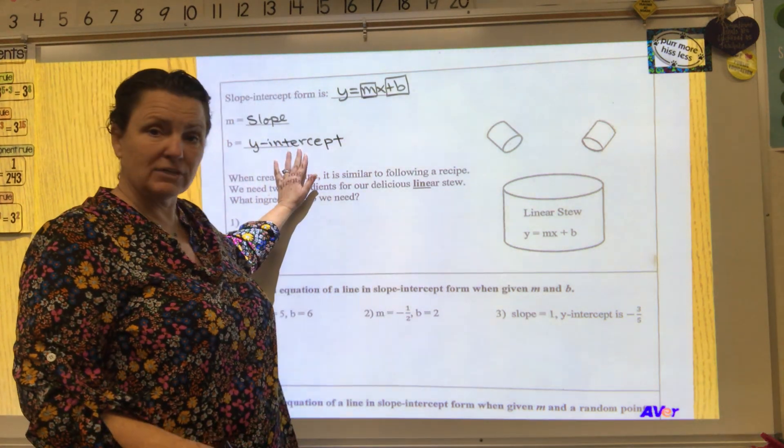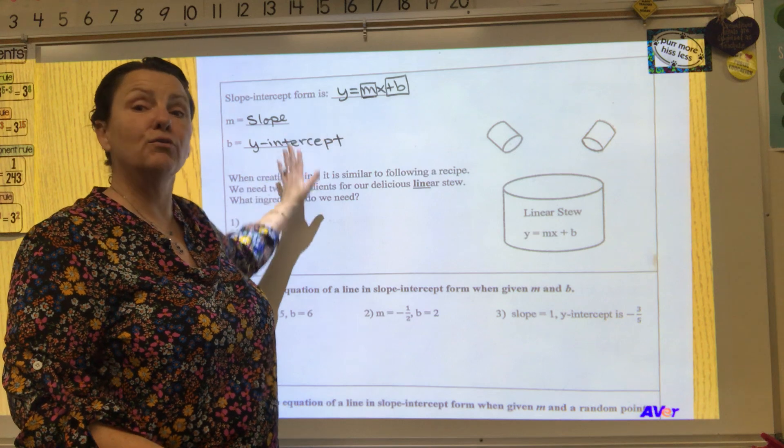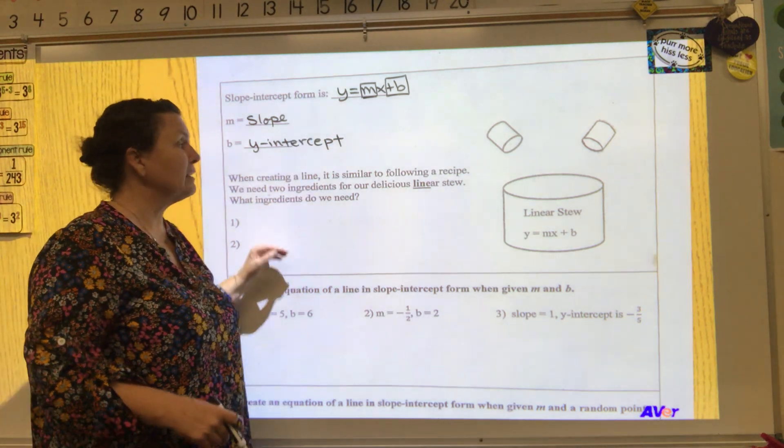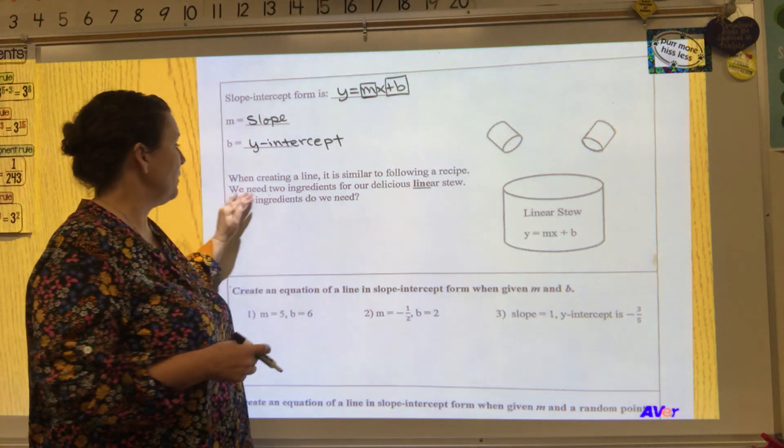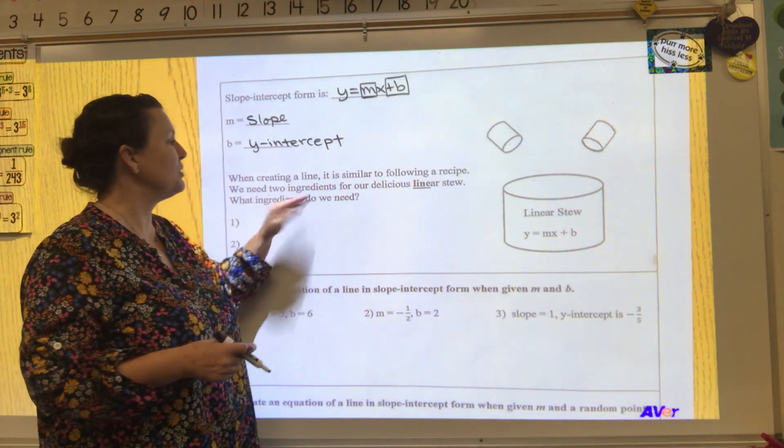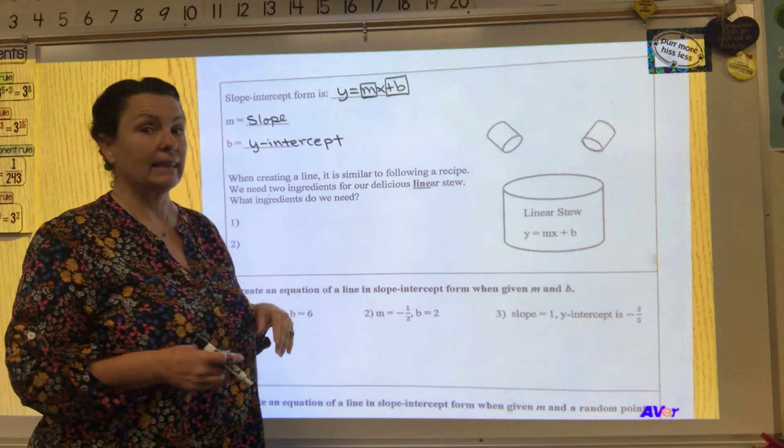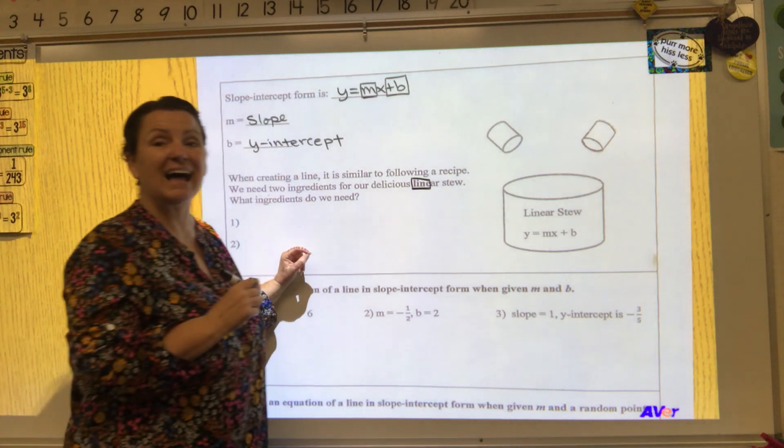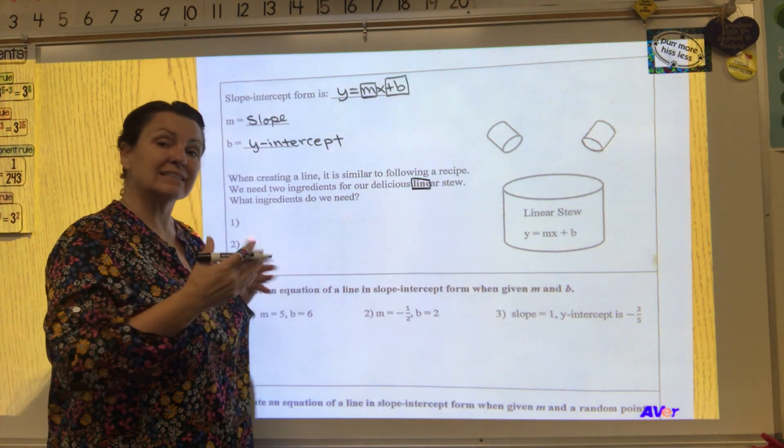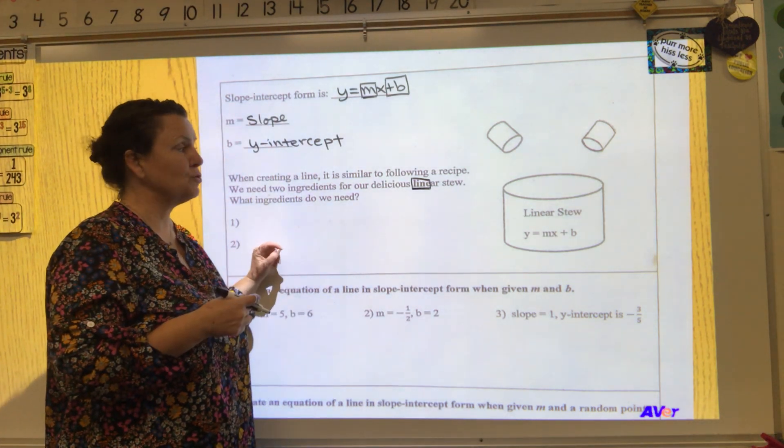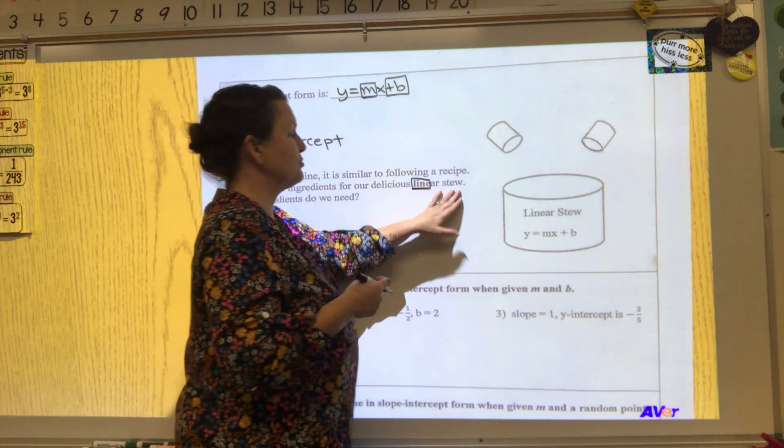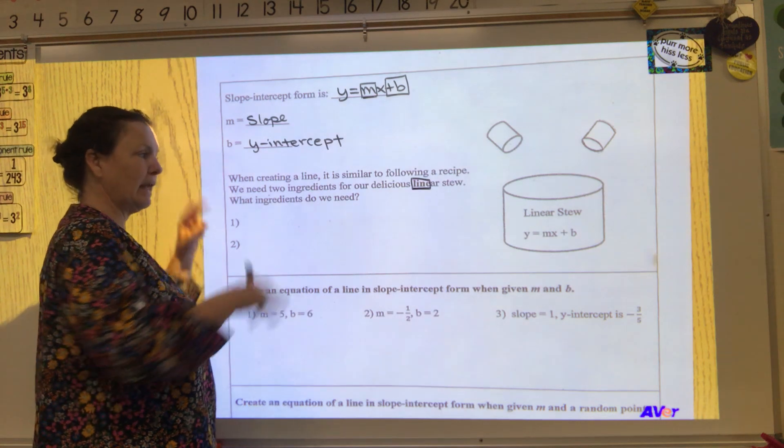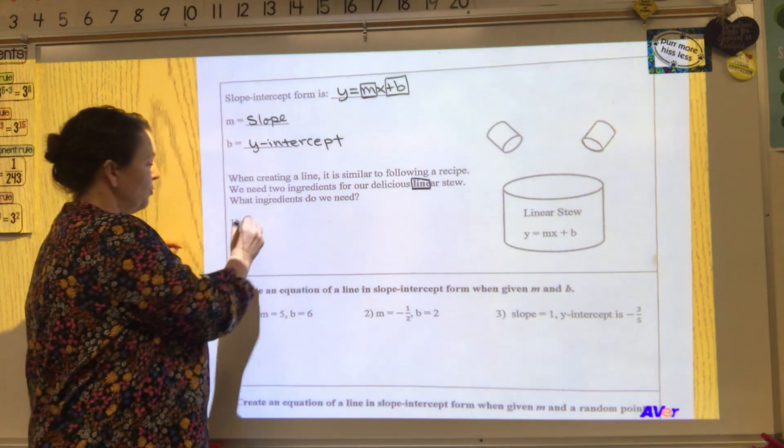So here's my starting point, and my slope tells me how to move from that given point when creating a line. That's similar to following a recipe - we need two ingredients for our delicious linear stew. Linear, the word linear has the word line in it, so anything that says linear we know has to do with straight lines.